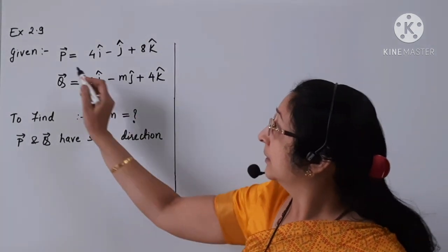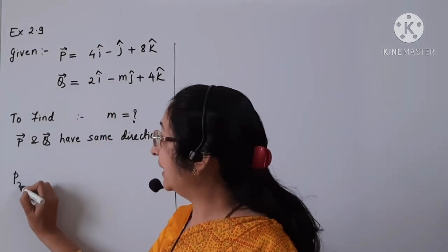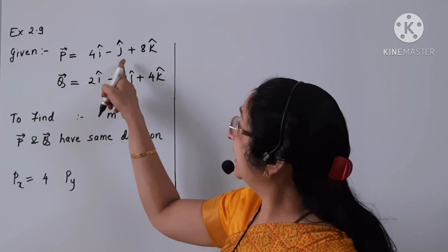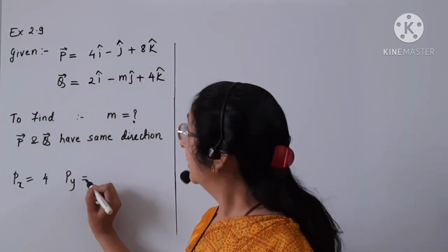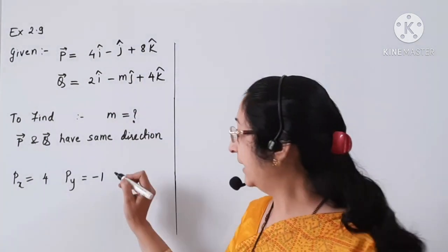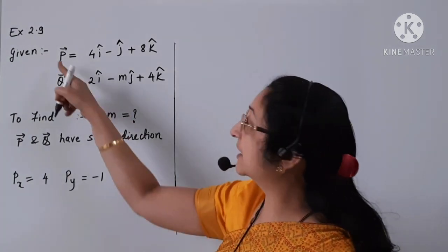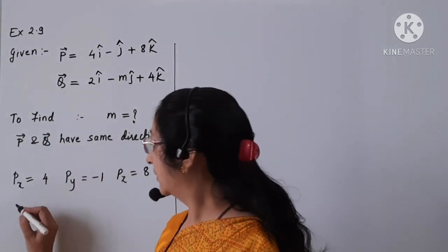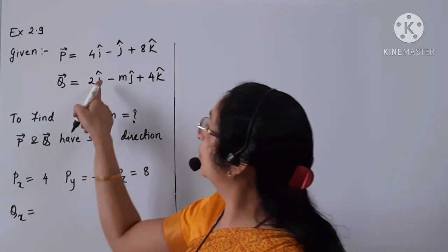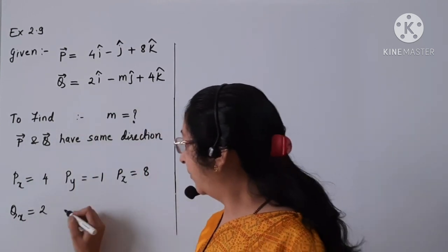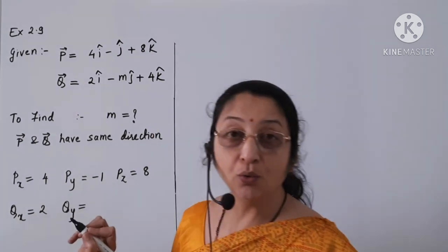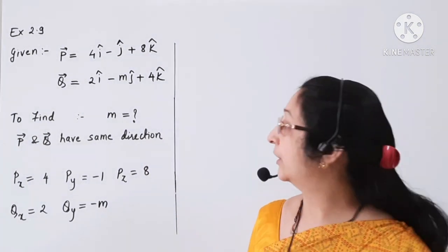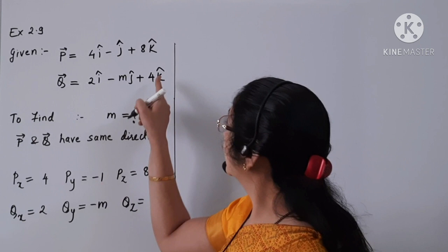The x-component of p, px, is 4. The y-component of p, which is minus j, so it is minus 1. And the z-component of vector p is 8. Similarly, the x-component of vector q is 2, the y-component of vector q is minus m, and the z-component of vector q is 4.